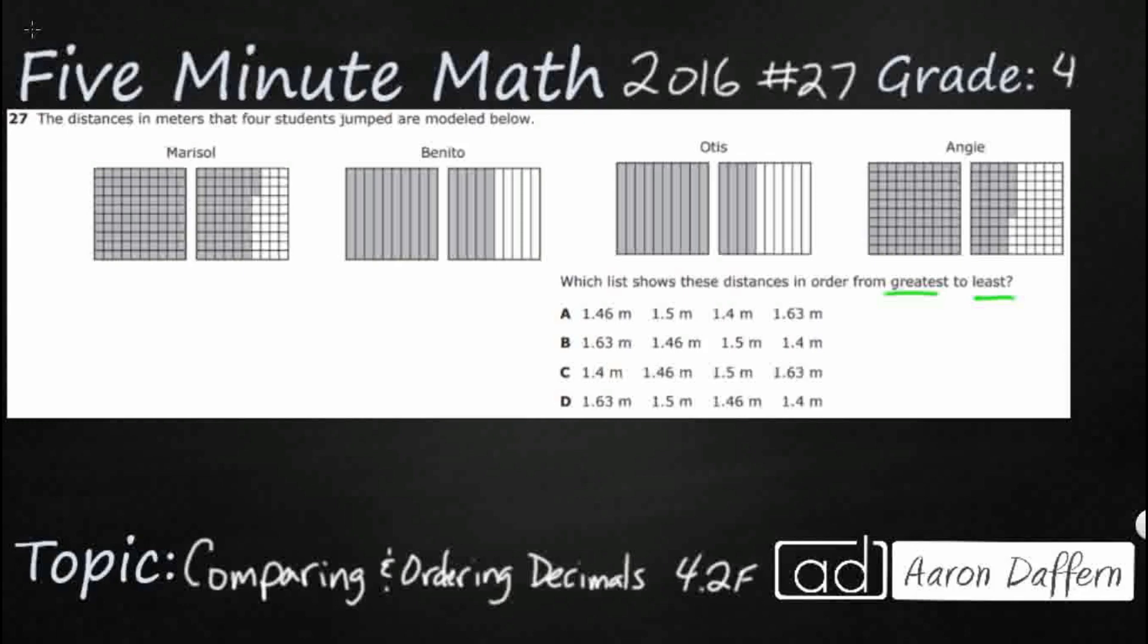Notice here that we've got Marisol and Angie are both going to the 100ths place, so you notice that what they're seeing here are these little grids that are 10 by 10. So, these are 10 by 10, so 10 by 10 is 100. So, we've got both Marisol and Angie are going to the 100ths place.